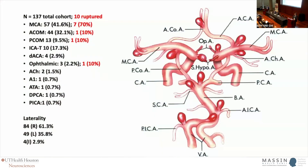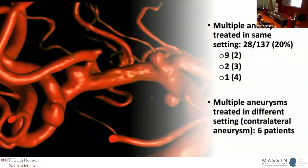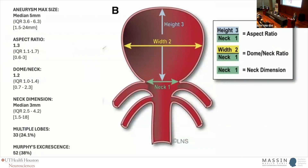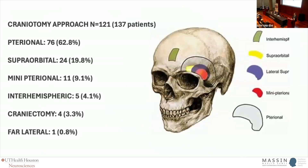The distribution of aneurysms is pretty much what you would expect in a cohort of about 137 patients. Some multiple aneurysms were treated in the same session, and some were contralateral. The maximum size of the aneurysm dome was at a median of about 5 millimeters; they were a little bit on the wide-neck side. About 25 had multiple lobes, and about 40 had some secondary excrescences or lobes.